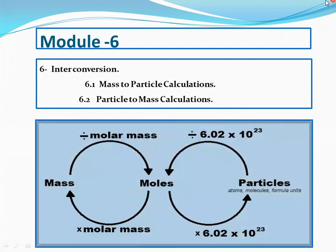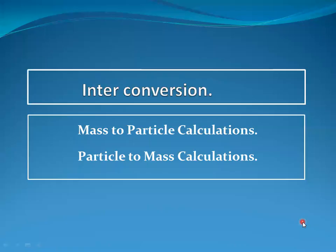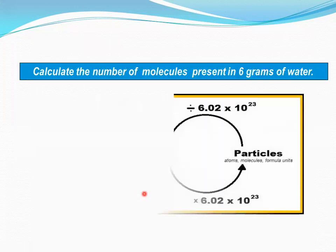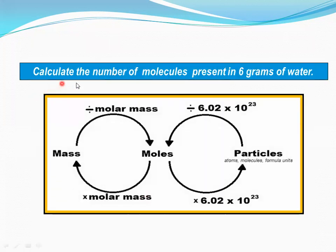Module number six. In this module we are doing the interconversion — mass to particle calculation and particle to mass calculation. Mass will be converted to particles, meaning atoms, molecules, or formula units, and these given atoms, molecules, or formula units can be converted into mass. We are doing two types of chemical calculations: mass to particle calculation and particle to mass calculation.